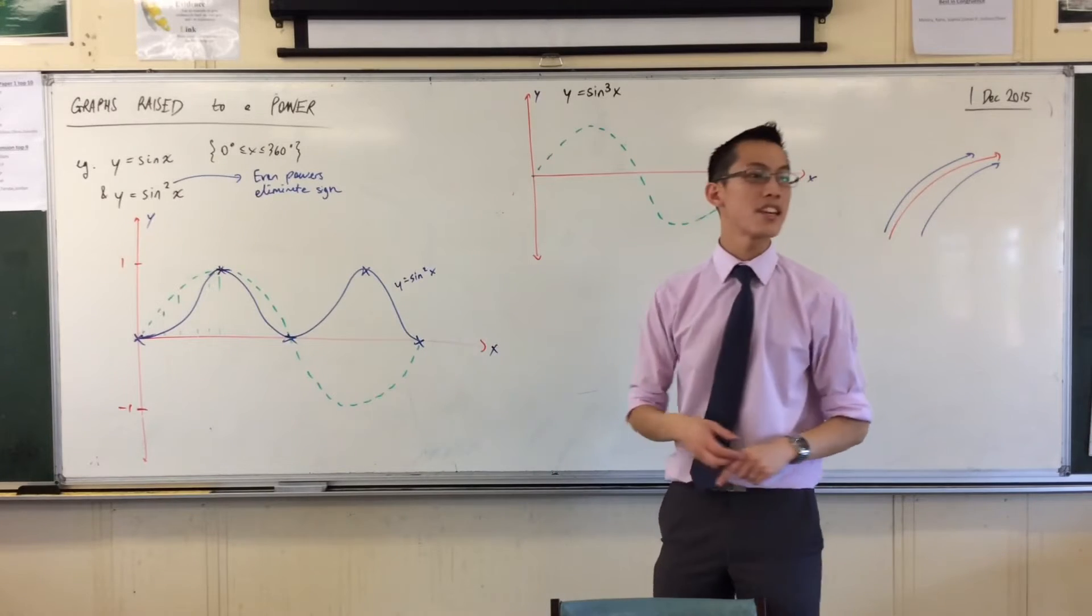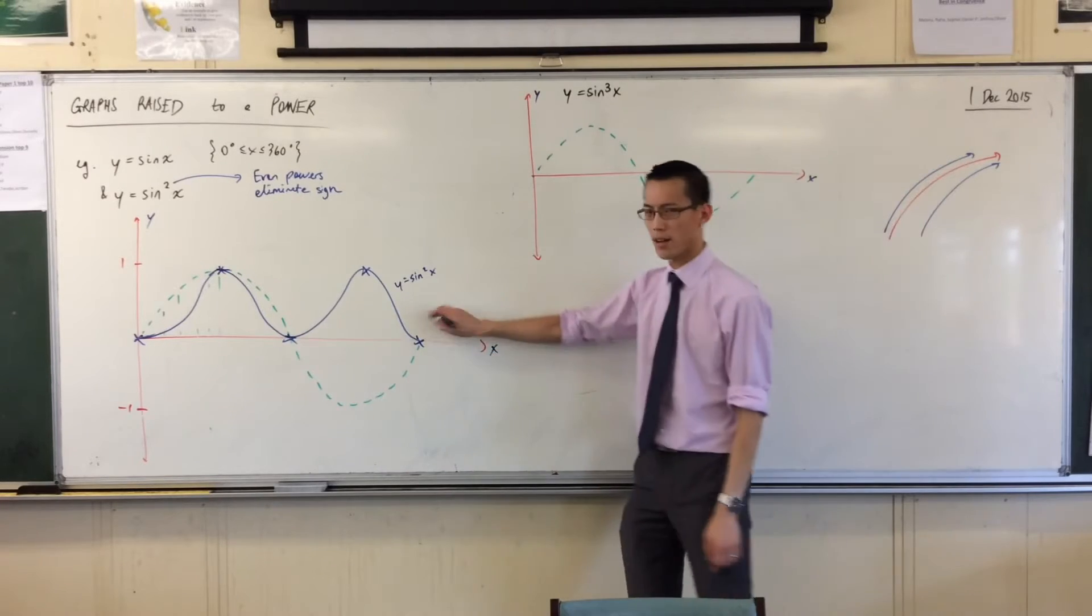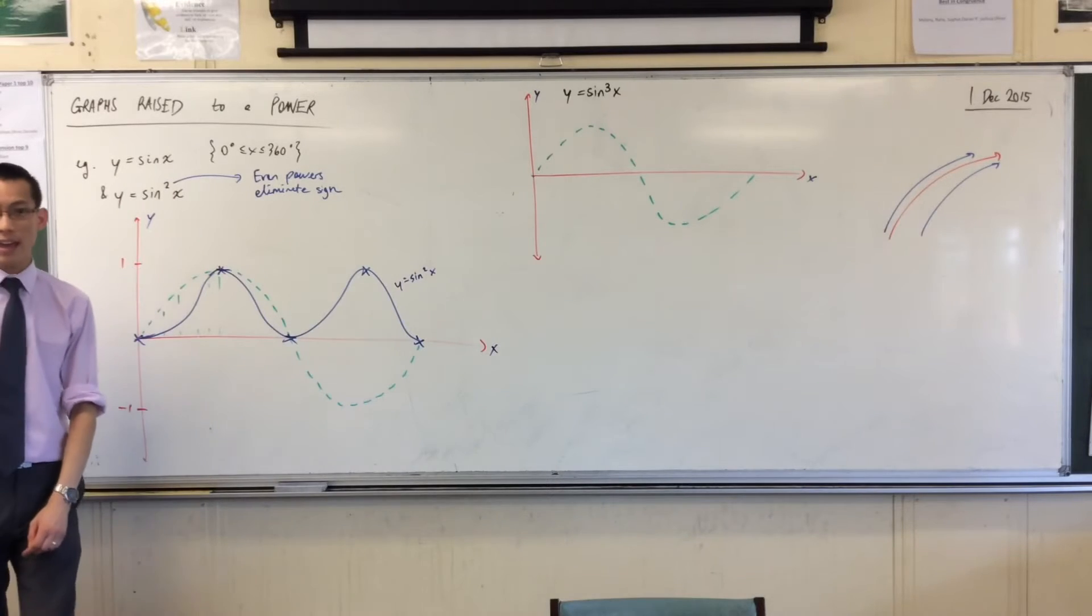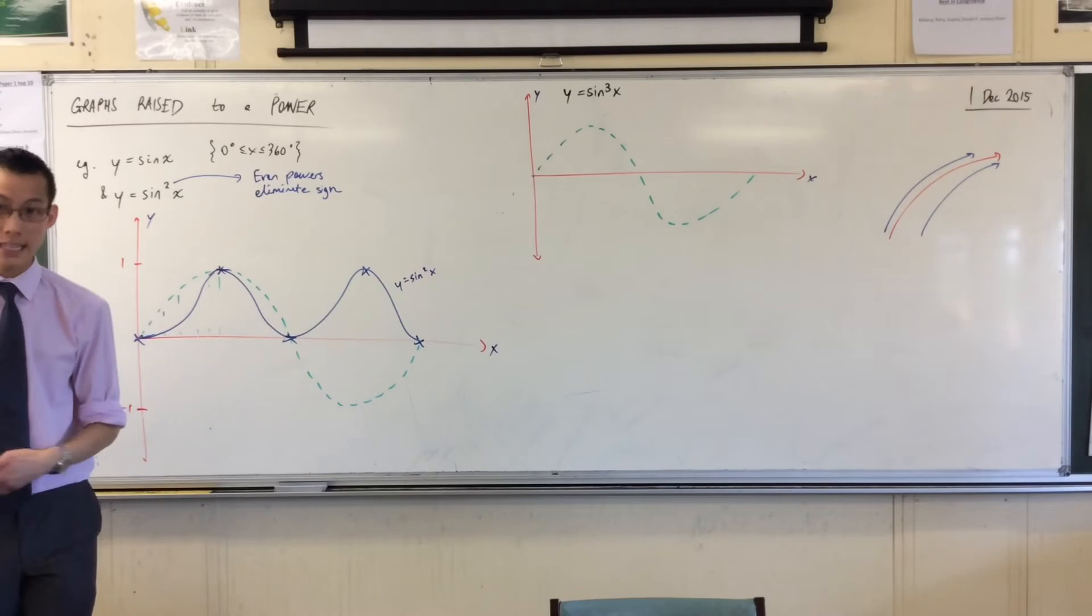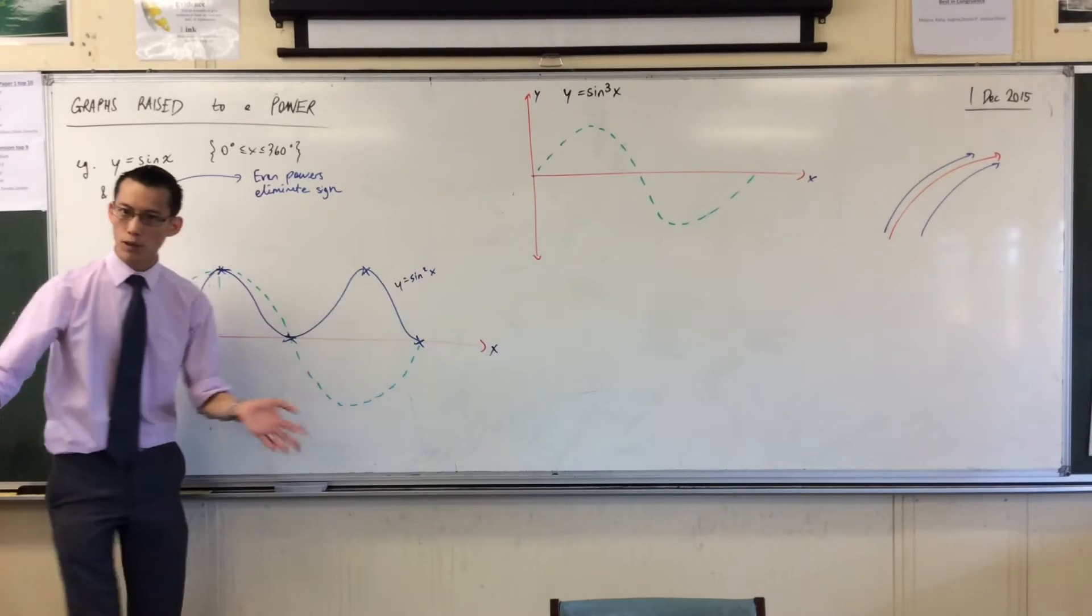Again, let's think about ordinates. Remember what were those easy ordinates that you picked out for me before in this graph? One, negative one, and zero. They're all really easy ordinates to work with. So bang, bang, bang, bang, bang. Great, I've got some pointers.